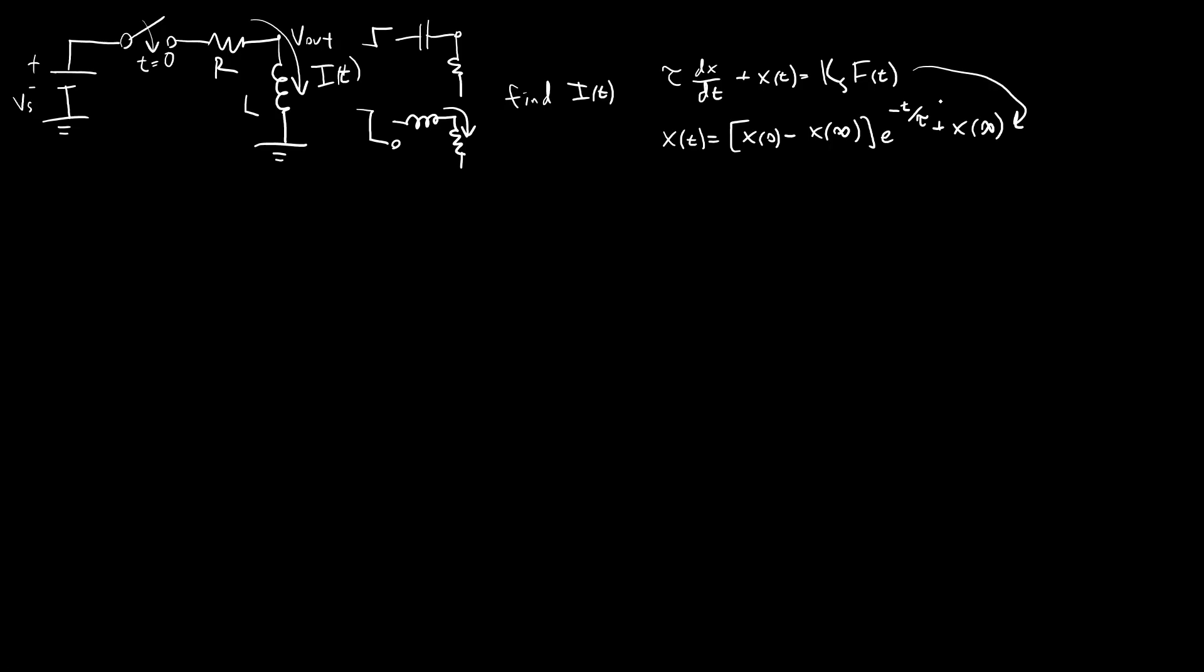We also have Ohm's law, talking about the equations we know for the individual circuit elements. For the resistor, we have V sub r, the voltage over the resistor, is equal to IR. And for the inductor, we have V sub l, the voltage over the inductor, is equal to L di dt.